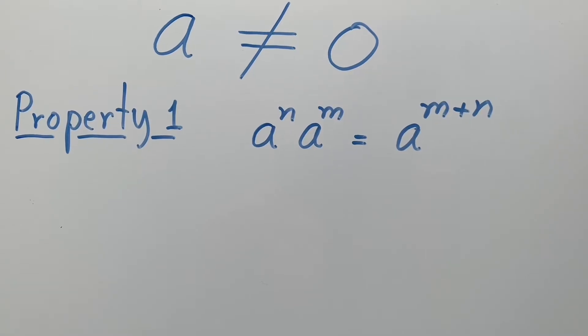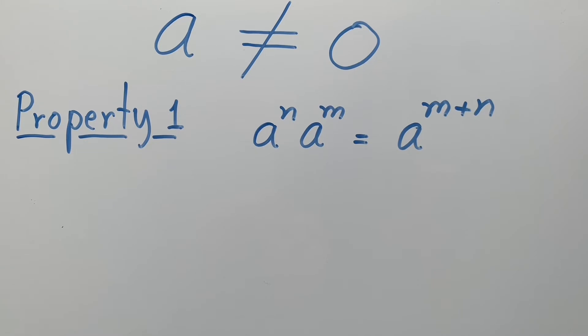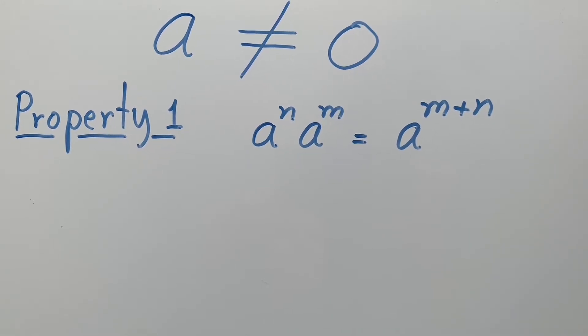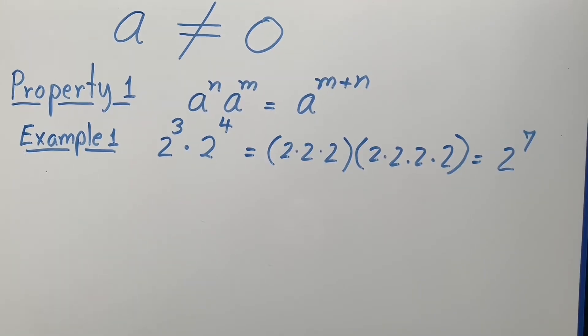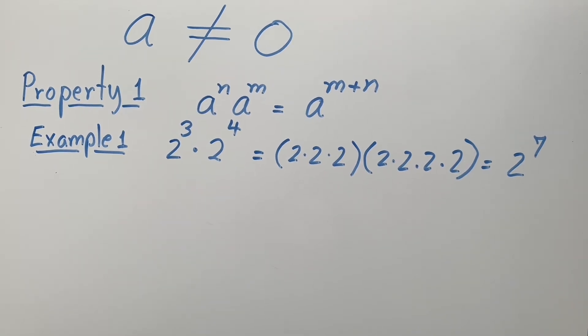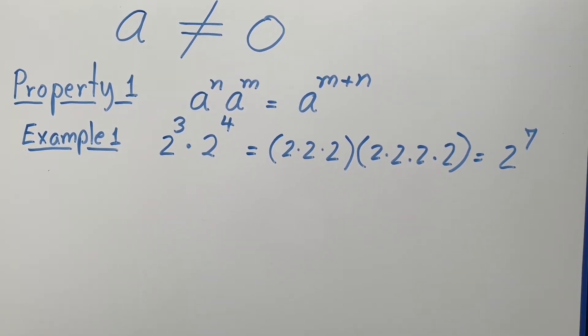Property 1: when multiplying 2 powers whose bases are the same, add the exponents. Example 1: 2 cubed times 2 to the 4th power equals 2 to the 7th power.